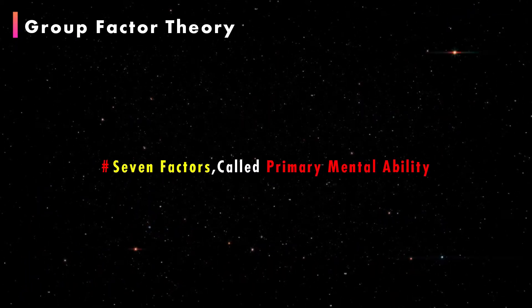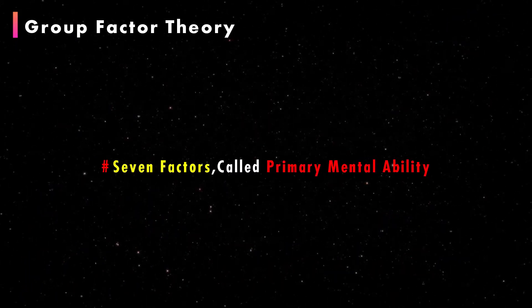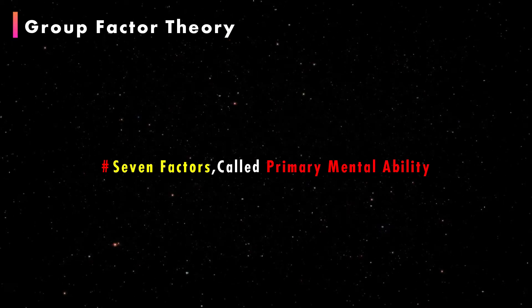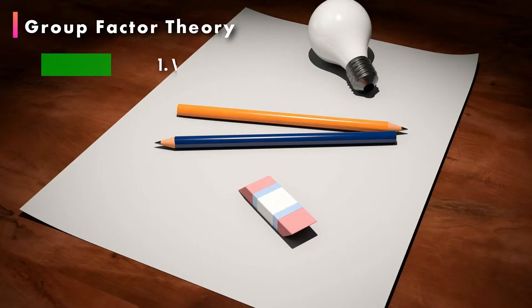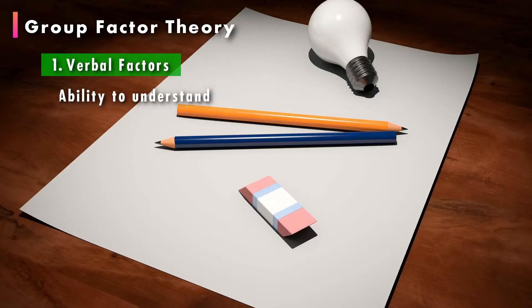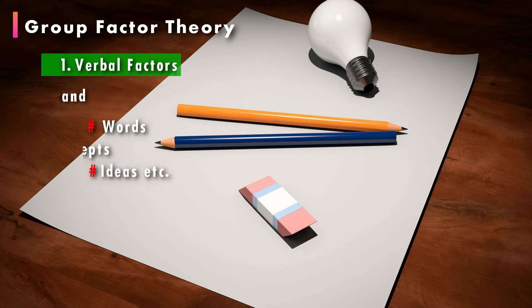Thurston proposed seven factors and called them primary mental abilities. These are: the verbal factor, which concerns comprehension of verbal relations, words, and ideas.